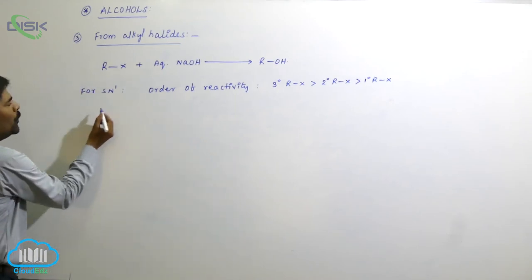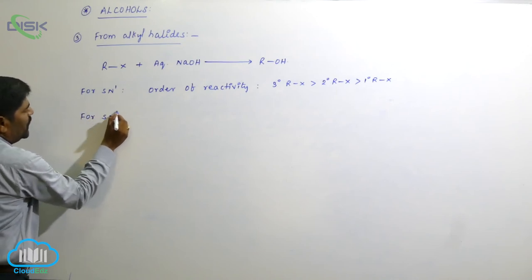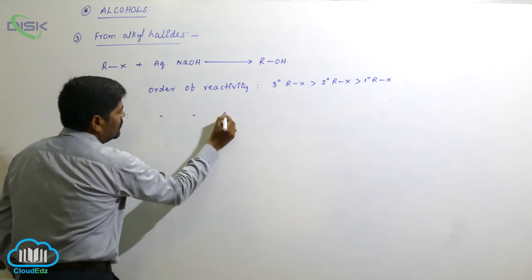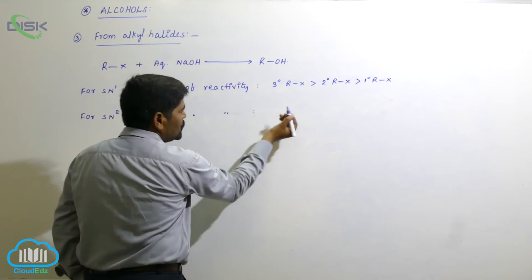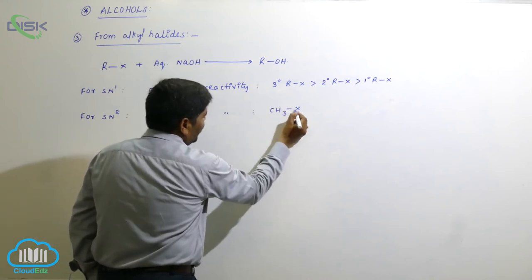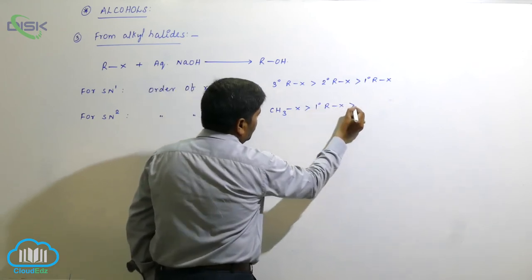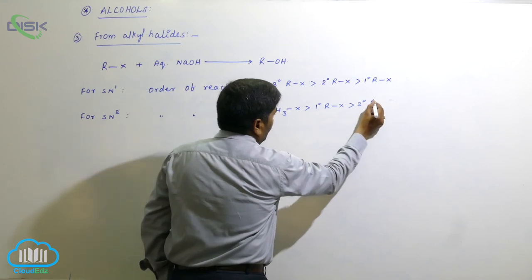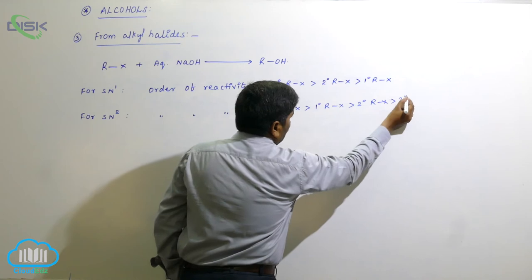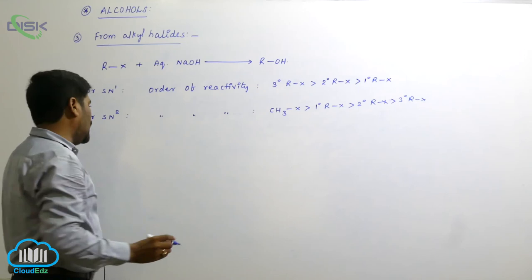For SN2, the order of reactivity is the opposite: methyl halide is most reactive, followed by primary alkyl halide, then secondary alkyl halide, and tertiary alkyl halide is least reactive.